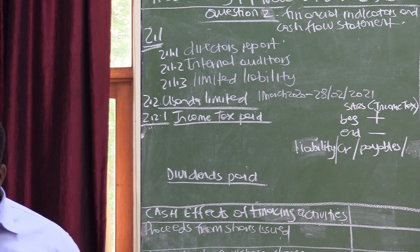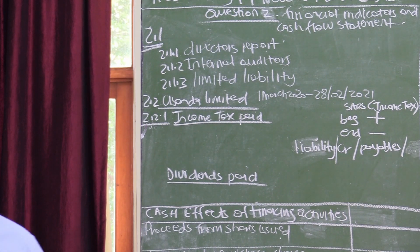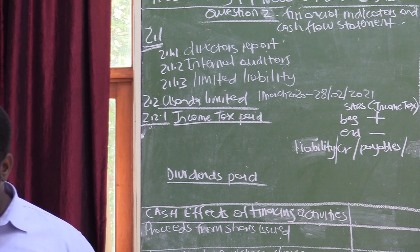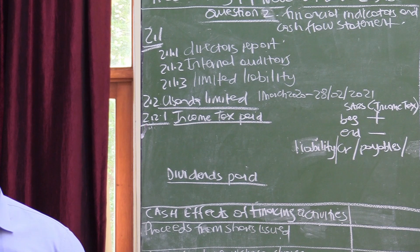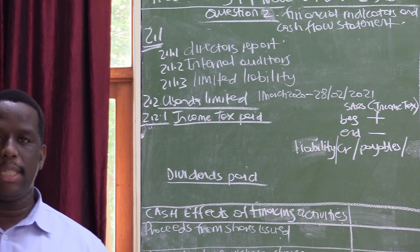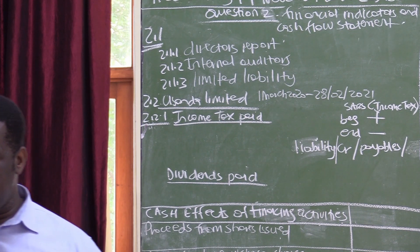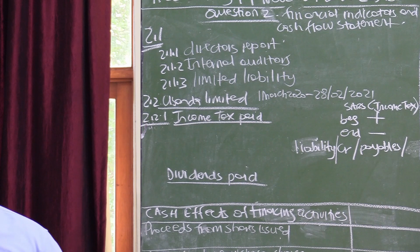Required 2.2.1. We are now doing the cash flow statement. Calculate the following figures for the 2021 cash flow statement. We want to calculate income tax payment.